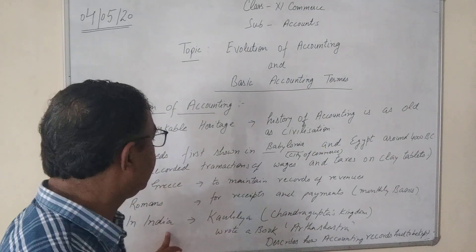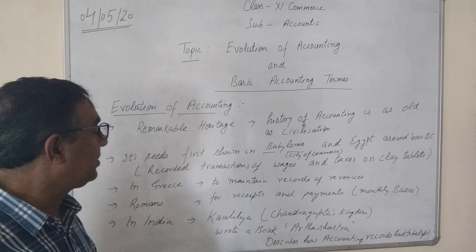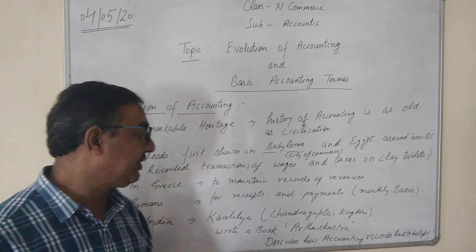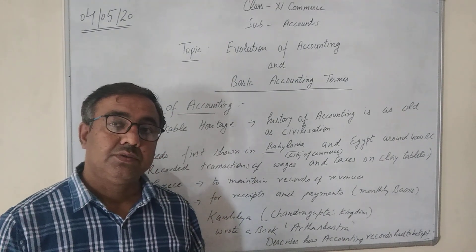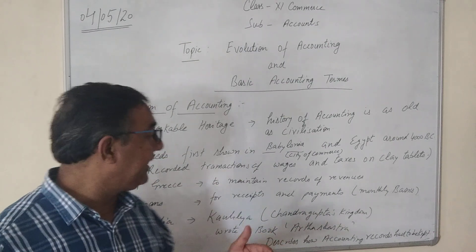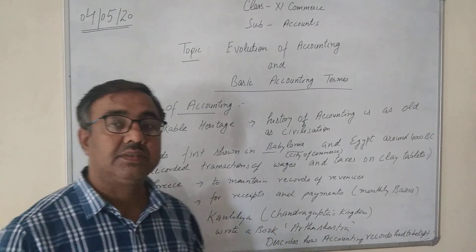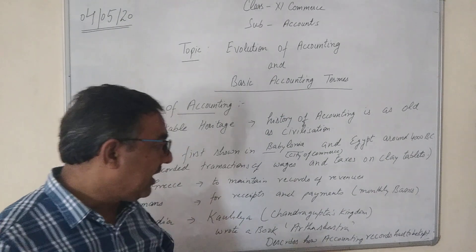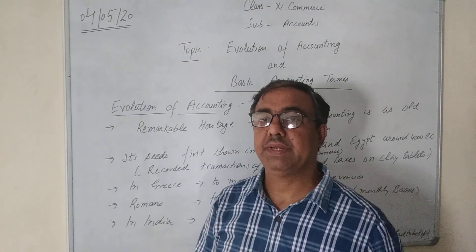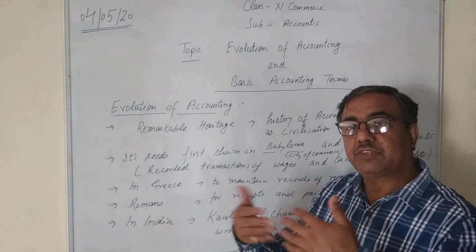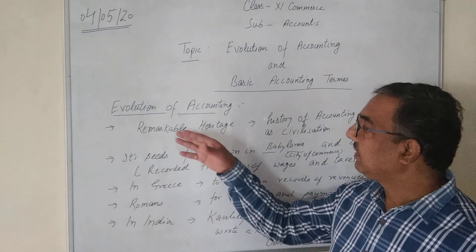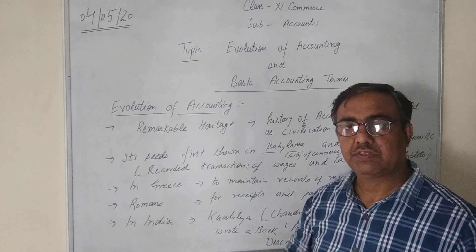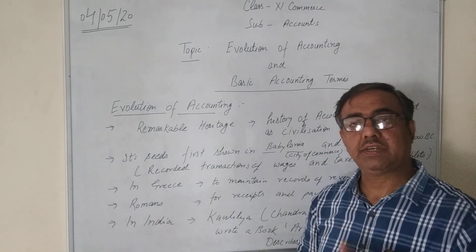In India, you may know of Kautilya Chanakya, one of the great ministers of the Chandragupta kingdom. Kautilya the Great wrote a book known as the Arthashastra, in which he explained how accounting records were to be maintained in their simplest form. So the evolution of accounting did not simply begin with debit and credit — this process started much earlier.